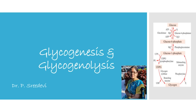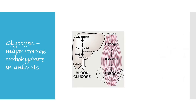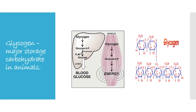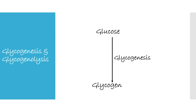Welcome back to Biochem Talks. In this video we study about glycogenesis and glycogenolysis. Glycogen is a major carbohydrate stored in liver and skeletal muscle. It is a polymer of alpha-D-glucose in which many glucose molecules are linked together by glycosidic bonds. Glycogenesis is the synthesis of glycogen from glucose molecules, and glycogenolysis is the degradation of glycogen to glucose molecules.